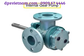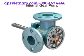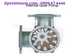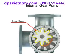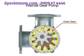Internal gear pumps are exceptionally versatile. This type of pump has one inner gear which is inside a second outer gear. The inner gear has a shaft driven by a motor and has teeth that protrude outward. The outer gear has teeth that protrude inward toward the center of the pump.